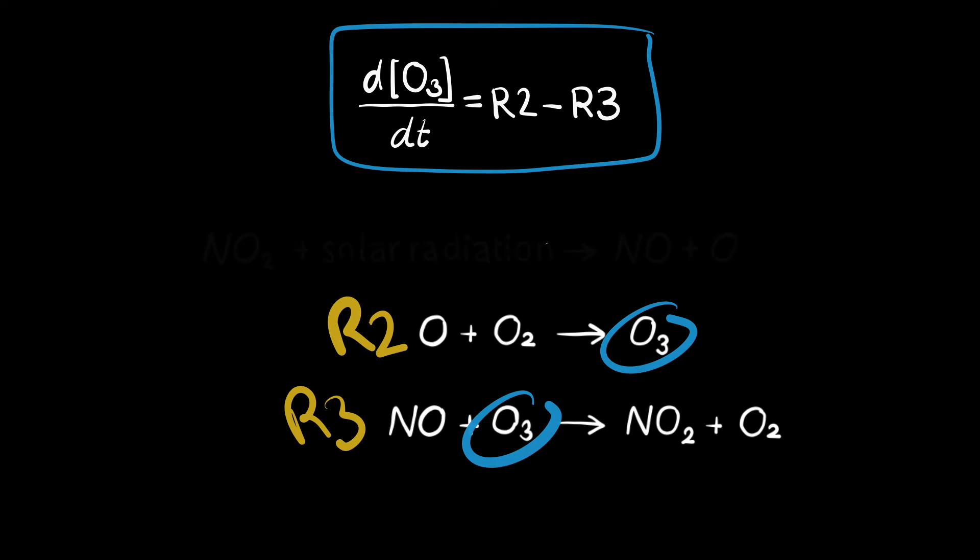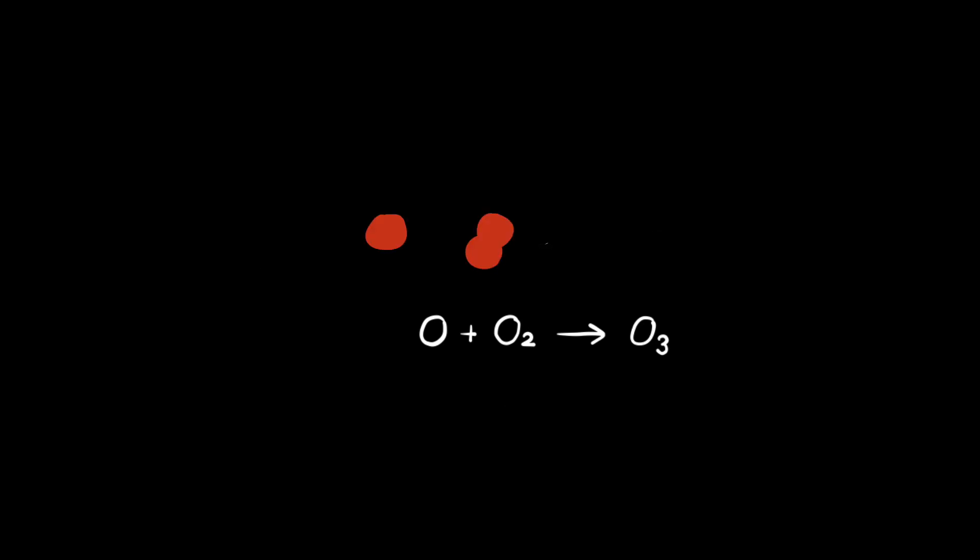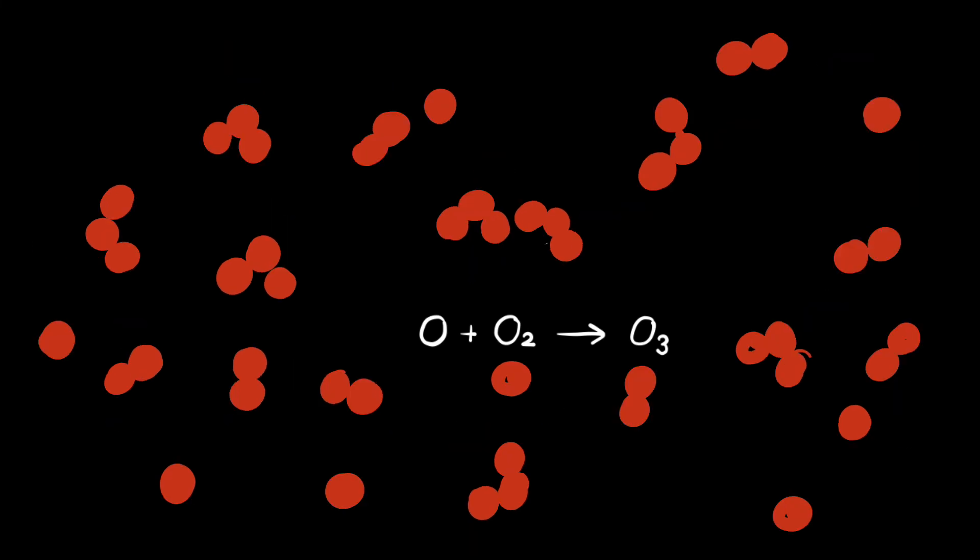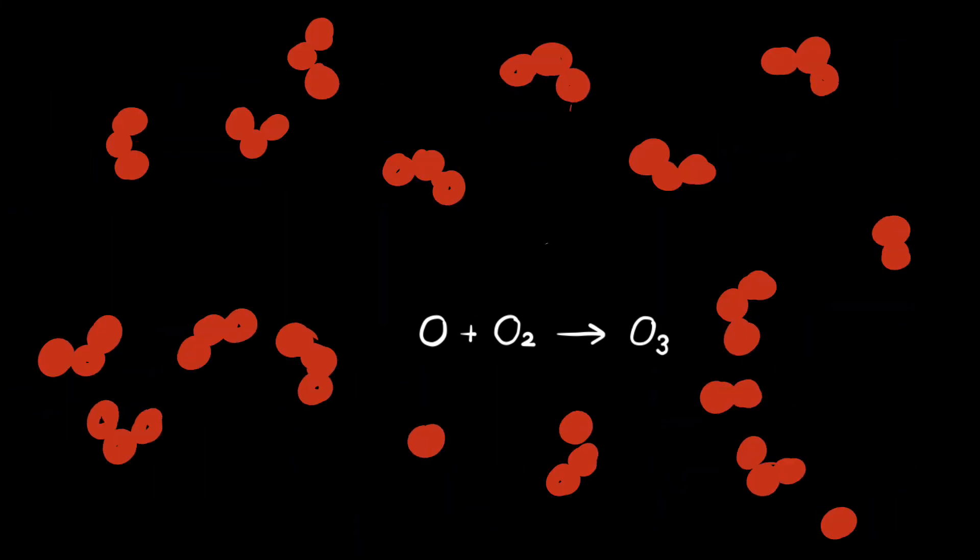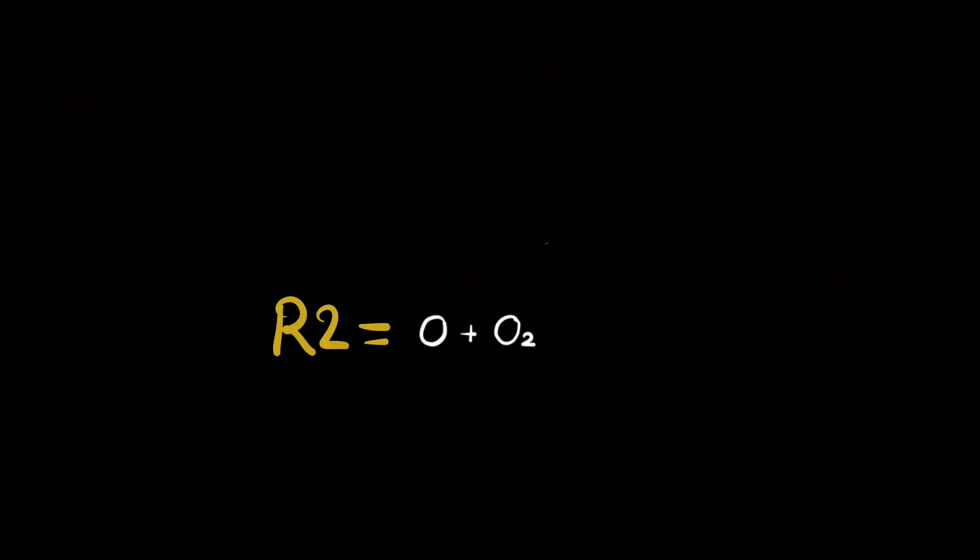To define the mathematical expressions for these flows, we now use the chemical reactions. For example, in reaction 2, one atomic oxygen molecule reacts with one oxygen molecule to form ozone. The probability that these molecules react is proportional to their concentration, so the rate of the chemical reaction is the concentration of atomic oxygen multiplied by the concentration of oxygen. Now we only need to multiply this expression with the proportionality constant, and we're done.